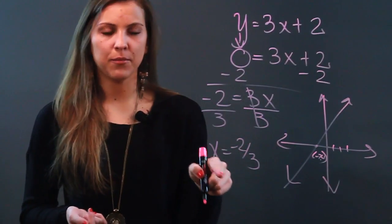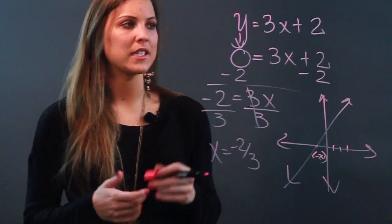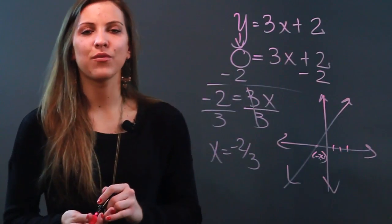So that means that my x-intercept for this line is negative 2 thirds. So that's how you use y equals mx plus b to find your x-intercept.